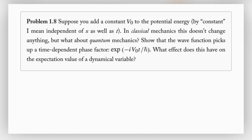Today we'll be taking a look at problem 1.8 from Griffith's Introduction to Quantum Mechanics, 3rd edition. In this problem we are asked to add a constant V₀, independent of x as well as t, into the wave function. In classical mechanics, adding such a constant isn't going to change anything, but what about quantum mechanics? Here we're going to show that the wave function picks up a time-dependent phase factor given as e to the negative iV₀t over h-bar, and then it asks us to describe what effect this has on expectation values of dynamic variables.